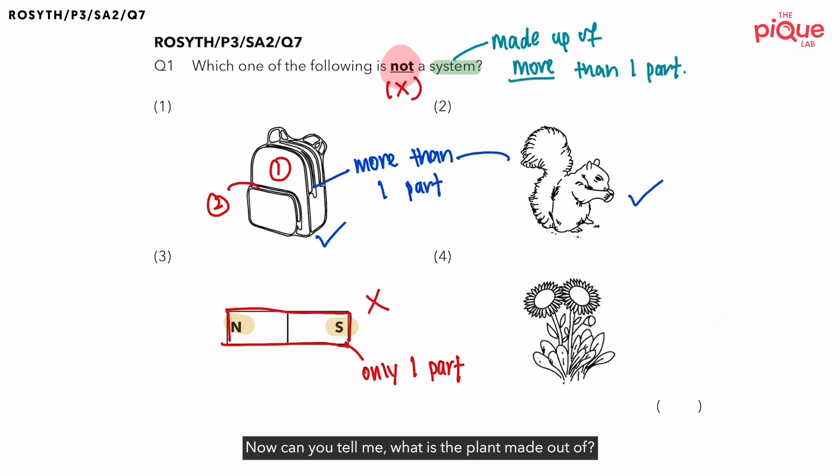Now, can you tell me, what is the plant made up of? Plants are made up of the leaves. Plants are also made up of the flowers. Any more? Plants are also made up of the roots. And plants are also made up of the stem.